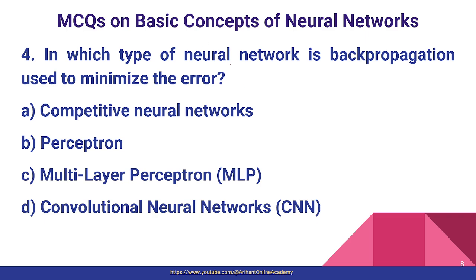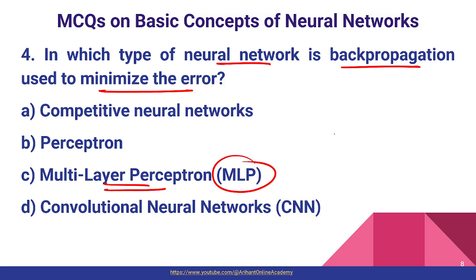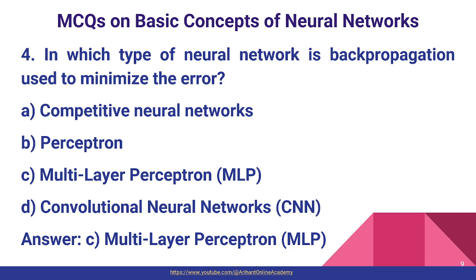Question number four: in which type of neural network is backpropagation used to minimize the error? The answer is MLP — multi-layer Perceptron, a feed-forward neural network. Backpropagation is used to minimize the error by adjusting parameters and biases with the help of activation functions. So option C, multi-layer Perceptron, is the correct one.